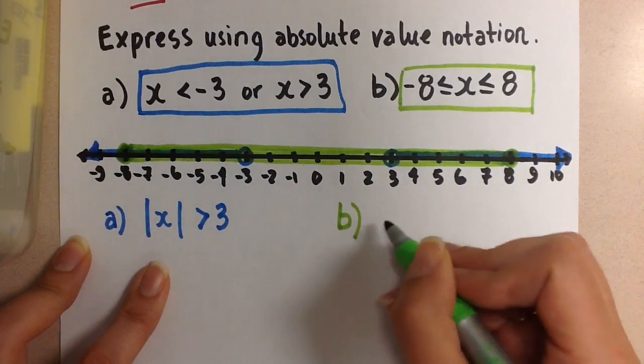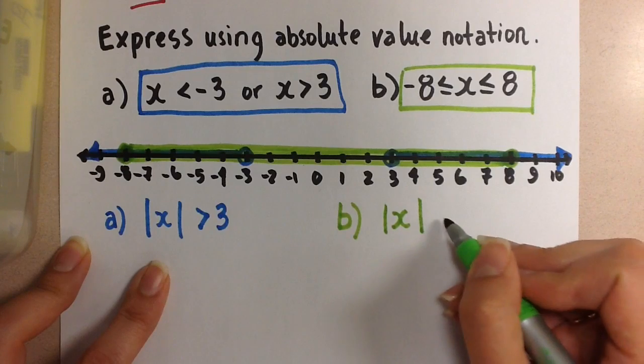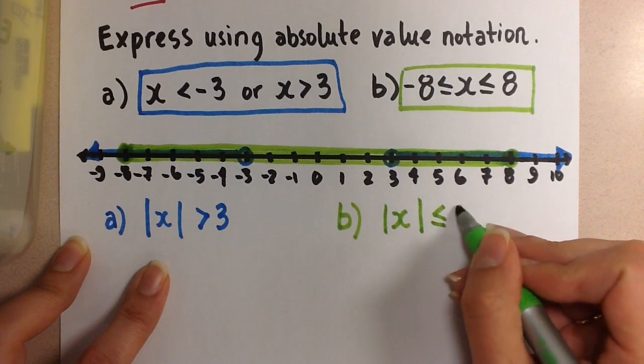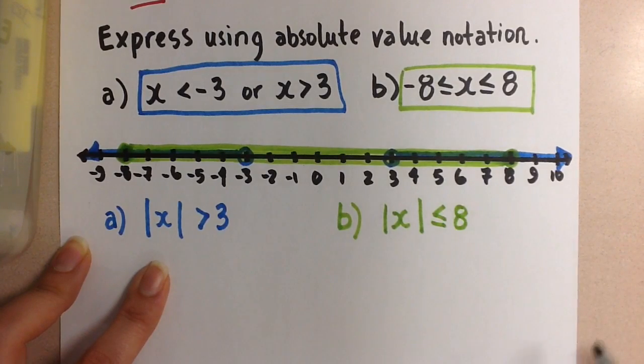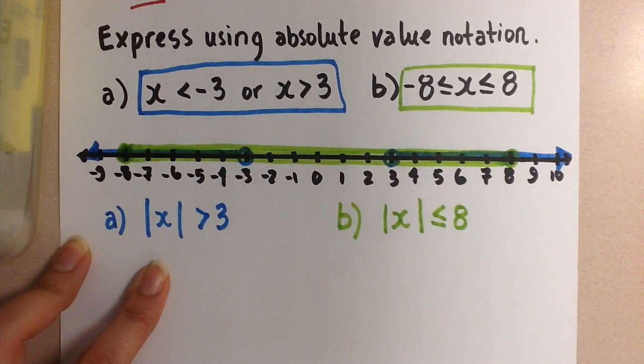So here the absolute value of x will always be less than or equal to the number 8 because on this number line we don't have any numbers that exceed that magnitude of the number 8.